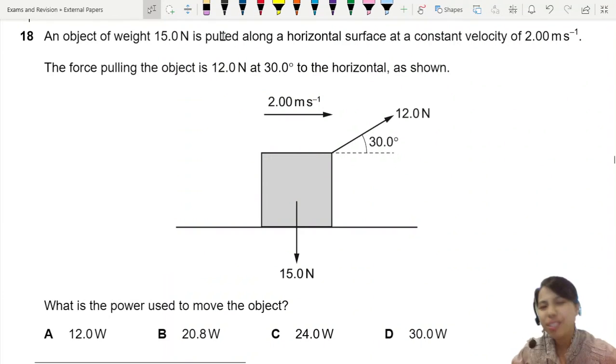An object of weight 15.0N is pulled along a horizontal surface at a constant velocity. The force pulling the object is 12.0N at 30 degrees to the horizontal. What's the power used to move the object?